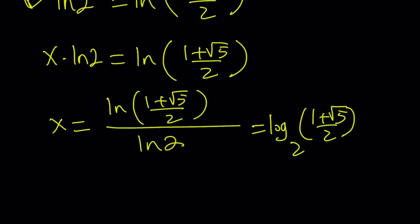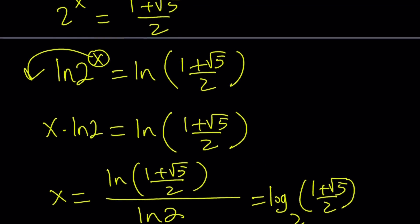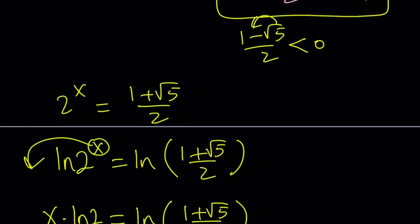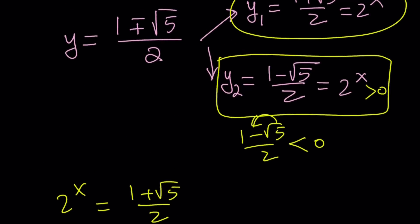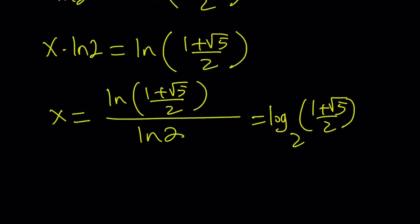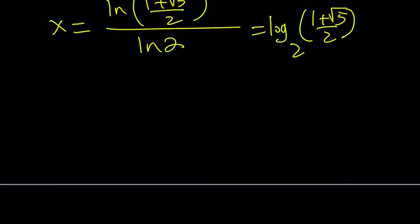That is the real solution, and it looks like we only got one real solution. We're going to look at the graph of the situation, which we'll also use in the second method, and hopefully get a better idea. But first let's look at y sub 2, which is negative: what happens if 2 to the power x equals 1 minus root 5 over 2?